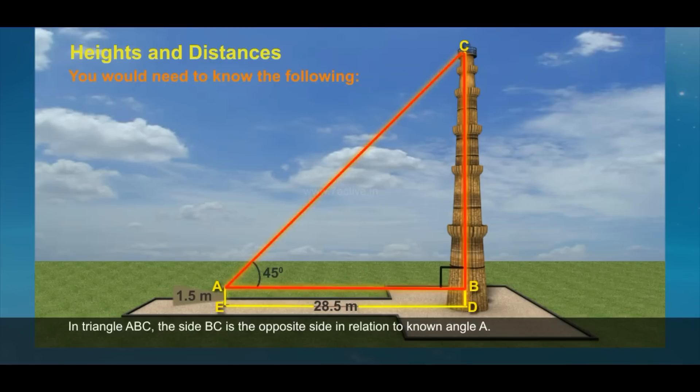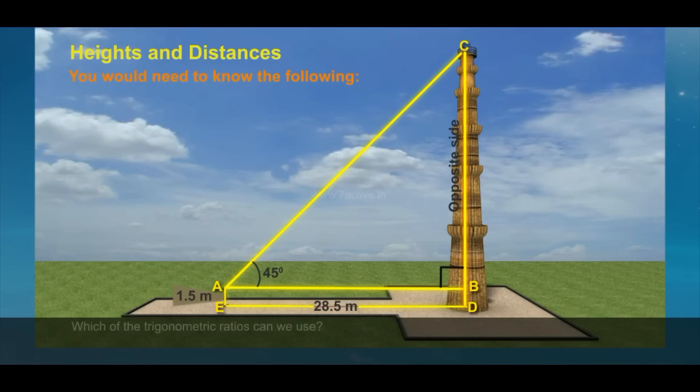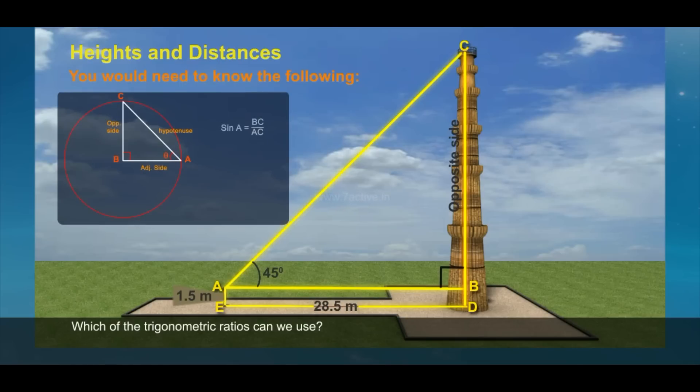In triangle ABC, the side BC is the opposite side in relation to the known angle A. Which of the trigonometric ratios can we use?